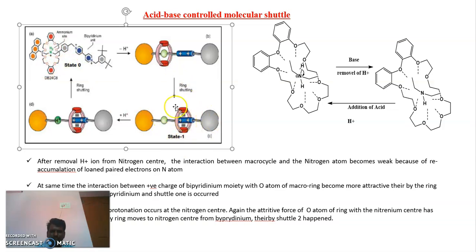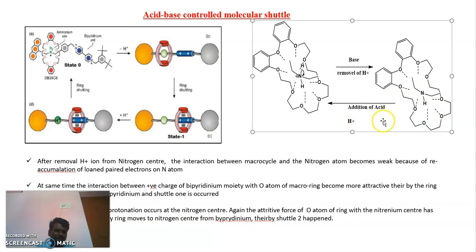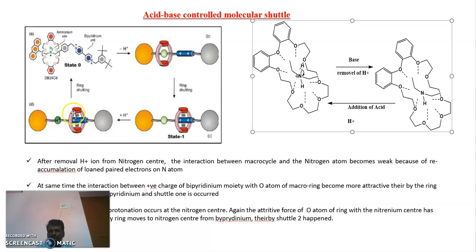Now the shuttle has moved to the second station — the ring which was at the ammonium position is now at the bipyridinium position. So now again, if you protonate — if you add H⁺ — the lone pair of electrons of this nitrogen is consumed by H⁺ and again the positive charge is retained on the nitrogen. That means the ammonium station is created again, and the positive charge on nitrogen is restored. So now that attractive force between this oxygen and this nitrogen is retained, and the ring starts to move from the bipyridinium back to the original ammonium position. By this protonation and deprotonation, we can move this ring between these two stations — between the two bulky molecules. So we can use this as a molecular machine for particular biological functions.